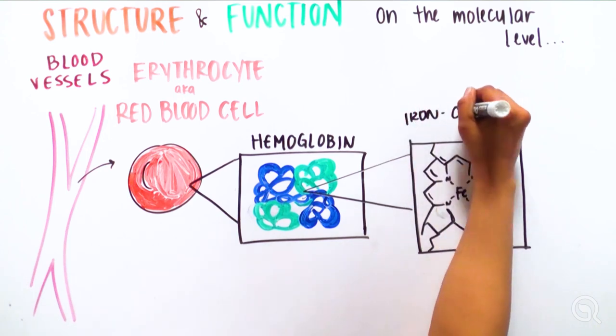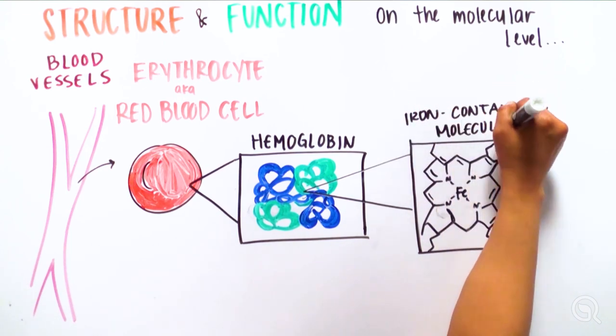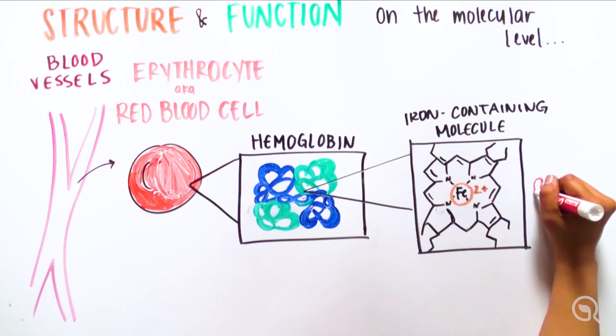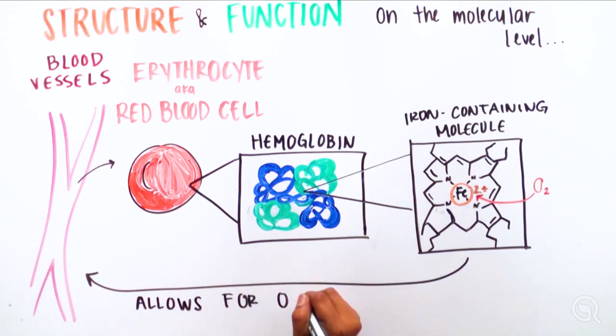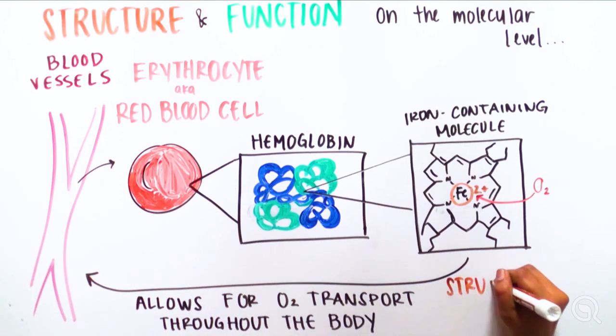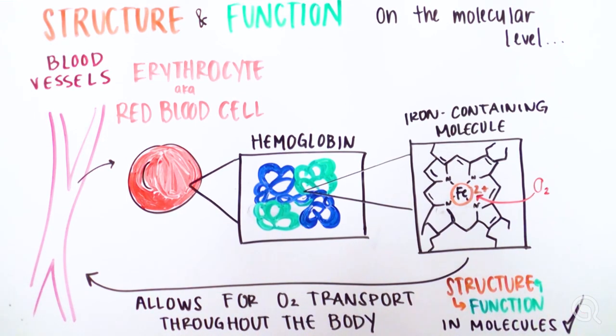For each iron-containing compound, a negatively charged oxygen binds to the positively charged iron. And this allows for the transport of oxygen in the blood throughout the body. Structure determines function in molecules like hemoglobin.